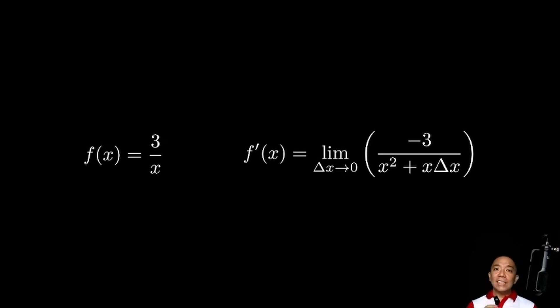Note that, yung natitirang expression na may delta x ay yung x plus delta x sa denominator. So, if we take the limit as delta x approaches 0 of the expression inside the parentheses, ang maa-affect lang ay yung x plus delta x na nasa denominator. That will approach 0 and it will not impact yung numerator natin negative 3 or yung x squared sa denominator.